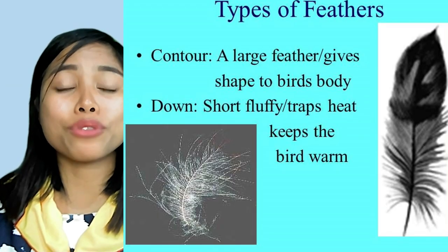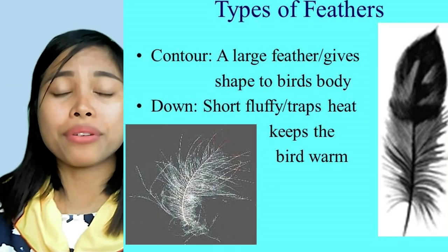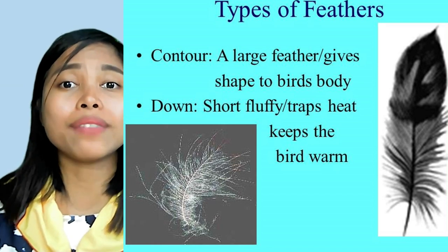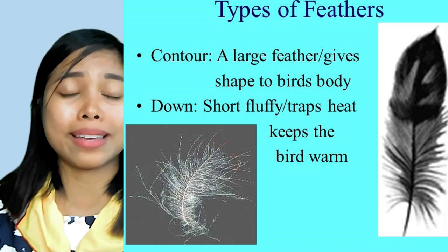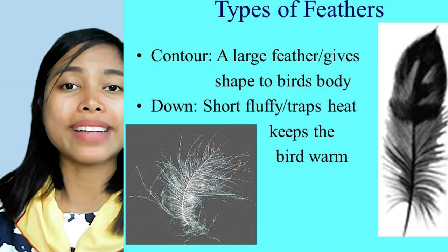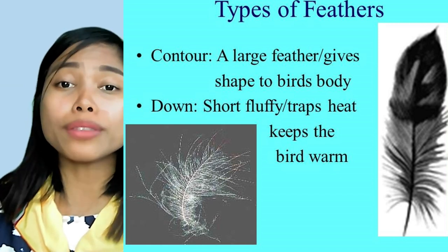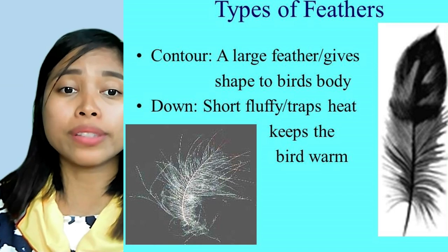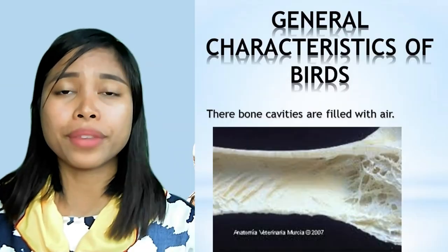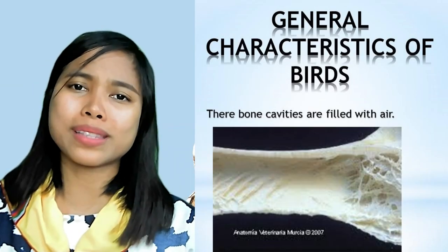Birds have specific types of feathers. The contour feather is a large feather that gives shape to the bird's body, while the down feather is short and fluffy, traps heat, and keeps the bird warm.